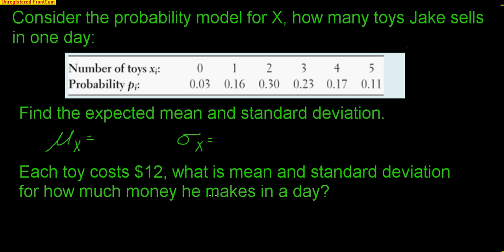So we expect to sell, on any given day, 2.68 t-shirts, with a standard deviation of 1.31 t-shirts. Make sure you understand what an expected value is: if we looked at many, many days, most days we'd sell 2 or 3 t-shirts, some days maybe 1. If I add up all the t-shirts sold over many days and divide by the number of days, that is the expected mean — an average of what I expect to sell in the long run. Of course that number could deviate, which is why there's a standard deviation.